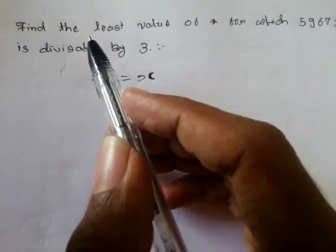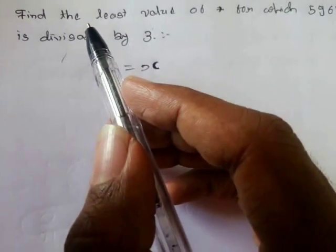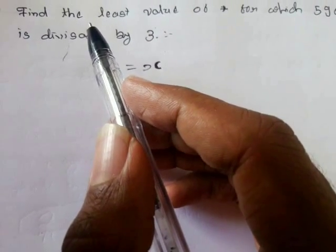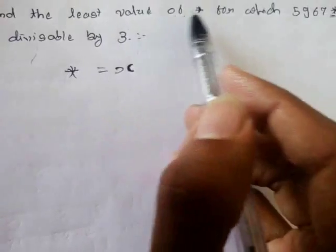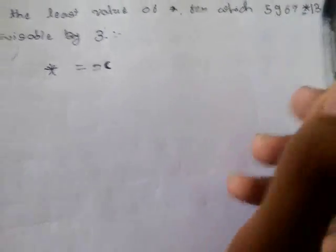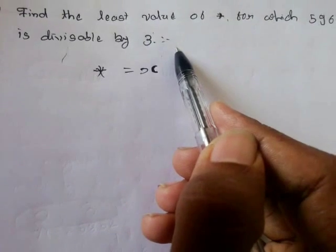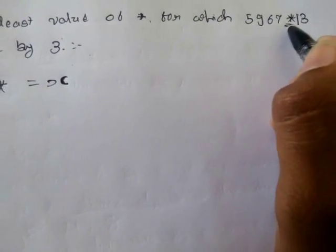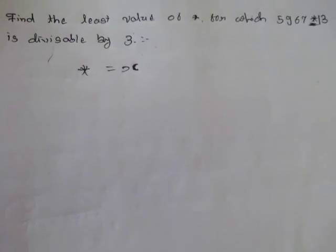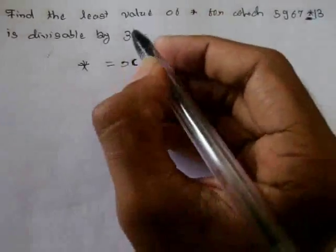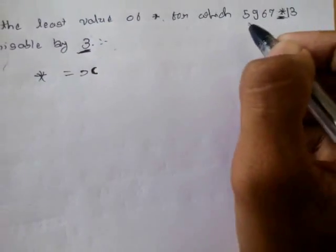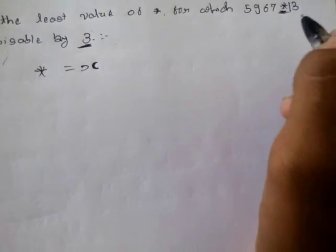Now we will see some examples based on these basic rules. The first question says: find the least value of star for which this number is divisible by 3. We know the rule — the sum of the digits of the number should be divisible by 3.